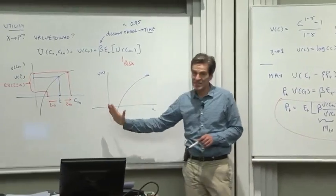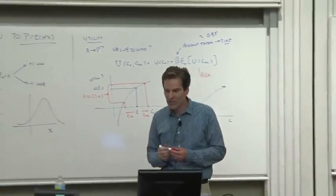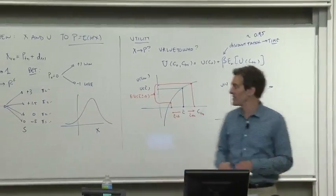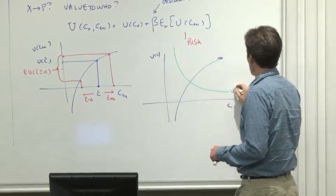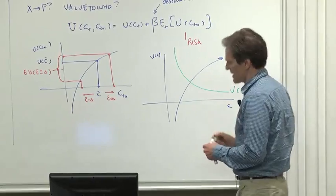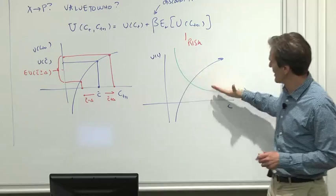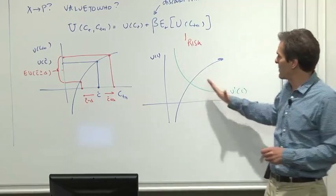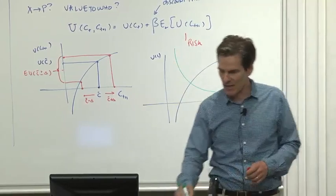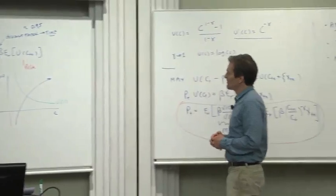As consumption goes down to zero, people get really, really hungry. And in fact, the marginal utility is the most important part of asset pricing. What matters for asset pricing is not so much the level of utility, but the marginal utility, how hungry people are. Marginal utility, the slope of the utility function, declines. That's how much a little extra consumption would make you happier, and it rises as consumption goes down towards zero.